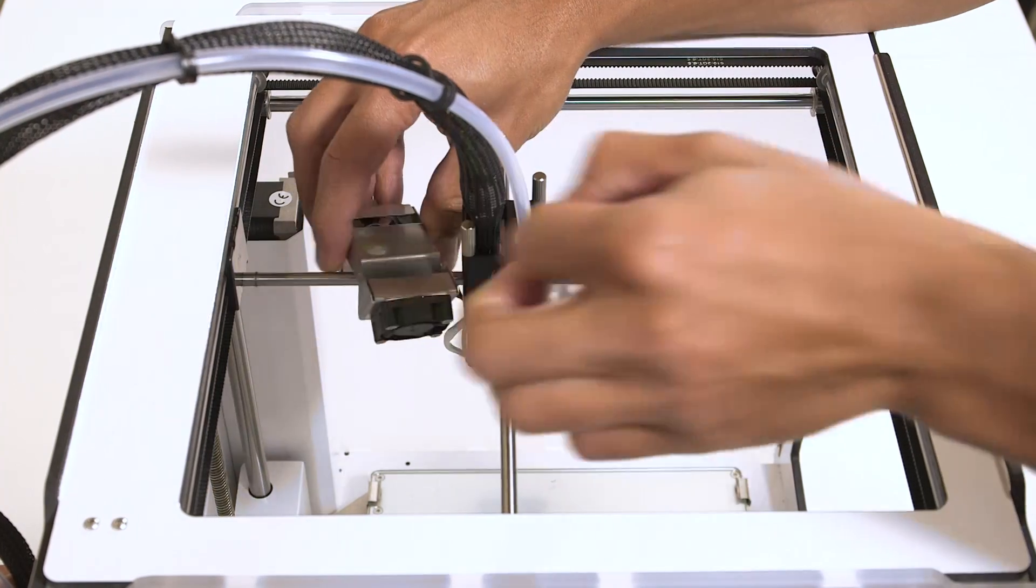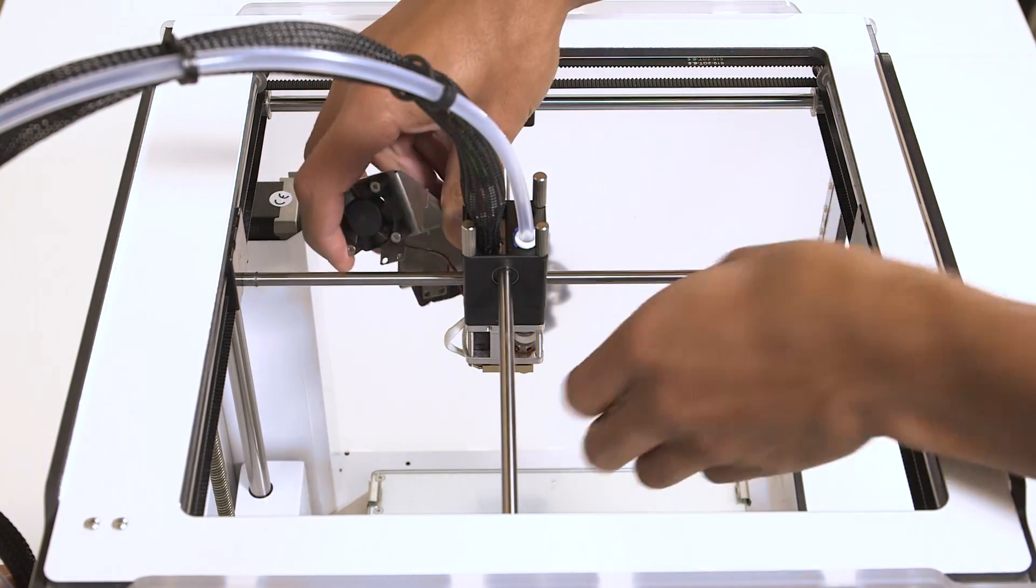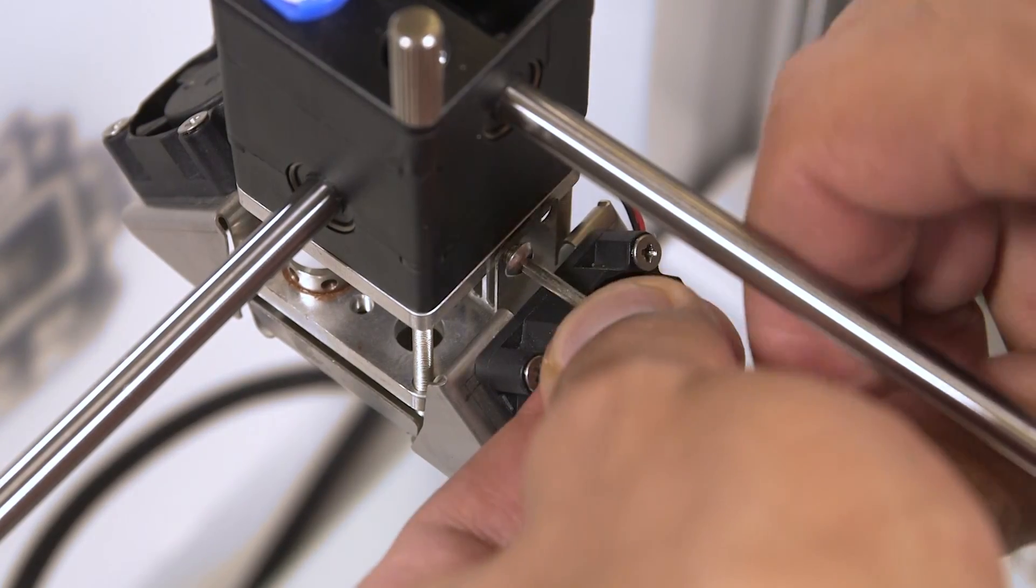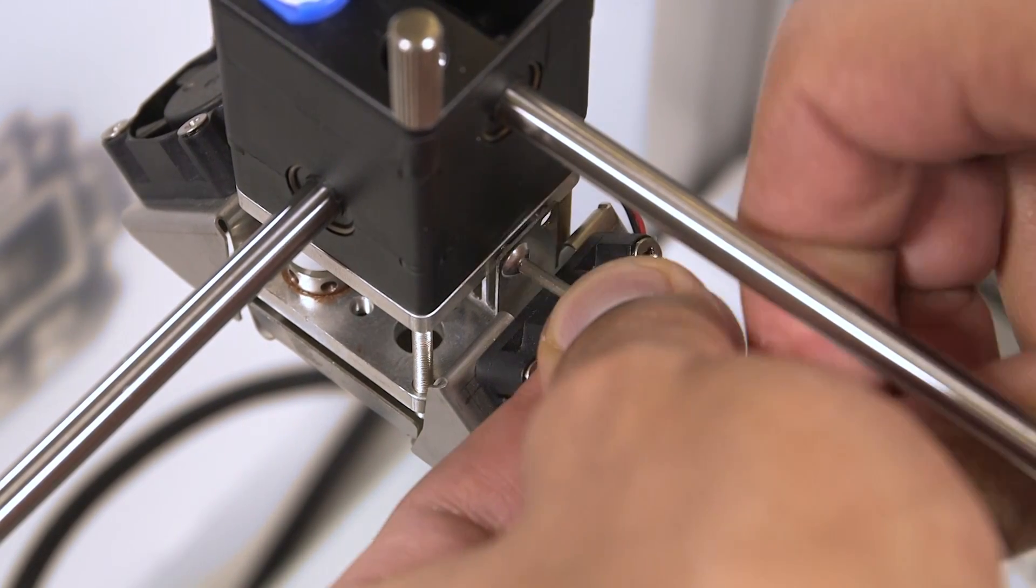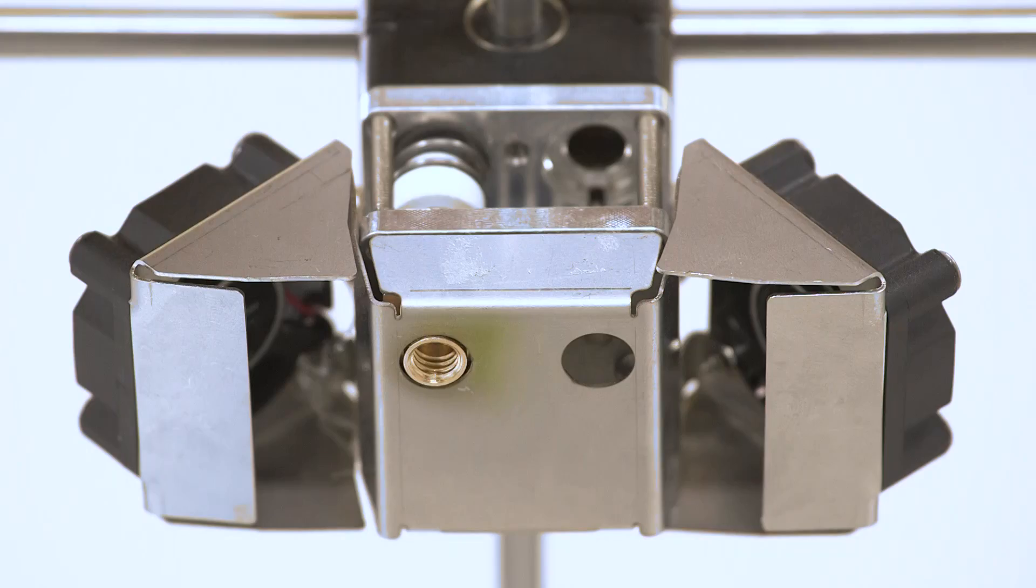Reattach the fan bracket to the hotend using the previously removed screws. Make sure that the fan bracket does not touch the Olsen Block anywhere, as this will result in heater errors during printing. Pay close attention to the tube of the Olsen Block and the distance between the block and the fan bracket.